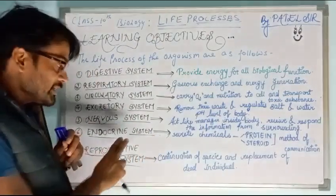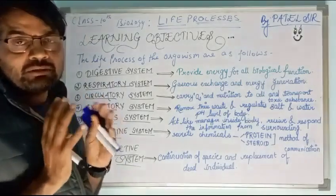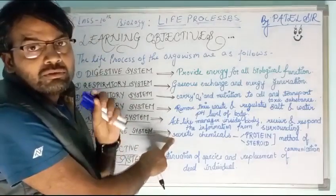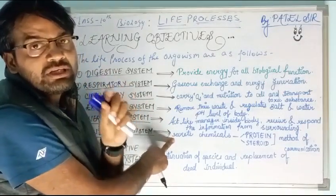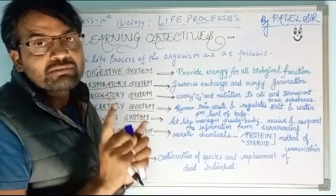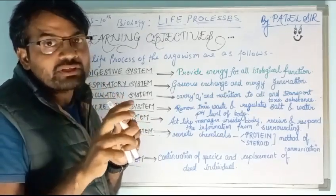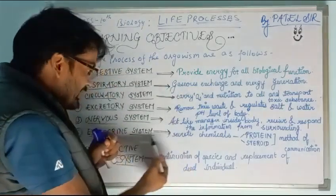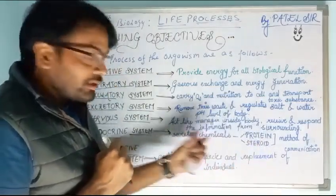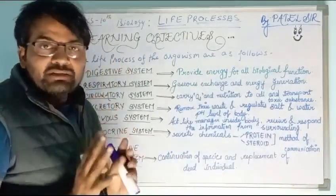The endocrine system works alongside the nervous system for communication throughout the body. Endocrine glands release hormones into the blood, which reach every cell. These ductless glands secrete chemical substances into the bloodstream. The endocrine and nervous systems are the two main communication methods of the body.